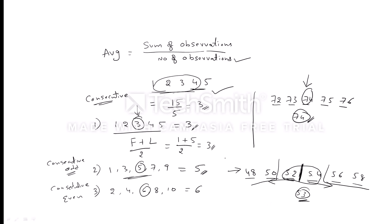Remember three important rules: average can be calculated by considering consecutive numbers like 1, 2, 3, 4, 5 or 96, 97, 98, 99, 100. You can also identify average for consecutive odd numbers or consecutive even numbers — in all these cases, the average is the middle number.